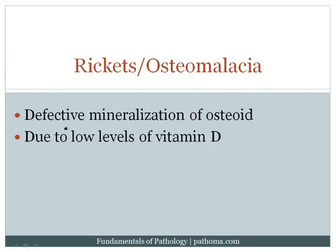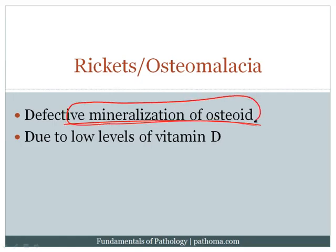The next two disorders are rickets and osteomalacia. In both, you have defective mineralization of osteoid. Osteoblasts produce osteoid, which then gets mineralized by calcium and phosphate to produce final bone. In rickets and osteomalacia, this mineralization process is defective.